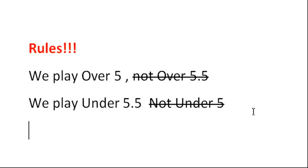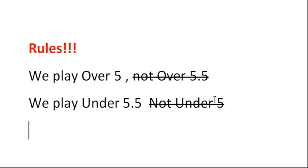Here are two important rules to remember when using the totals predictor. We always play over 5 — never play over 5.5. And for unders, we always play under 5.5 — we never play under 5. If you play over 5.5, you'll get a lot of losses instead of pushes. When the game ends 3-2 it's the most frequent score. And if you play under 5 instead of wins for under 5.5, you'll be getting a lot of pushes. So if you bet incorrectly you'll only get losses and pushes, but if you play it correctly you mostly get pushes and wins.